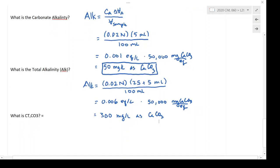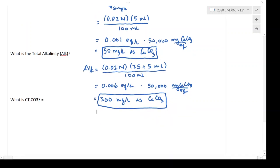And now to get the CTCO3, I can actually take the difference between those two things, because we have carbonate alkalinity. Our CTCO3 is going to be equal to the total alkalinity minus the carbonate alkalinity.